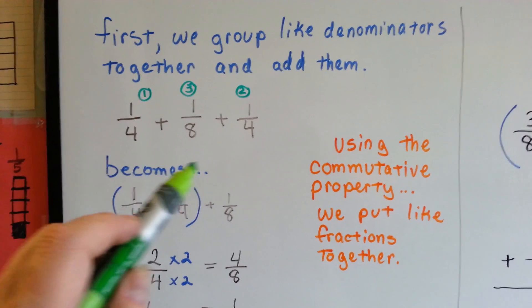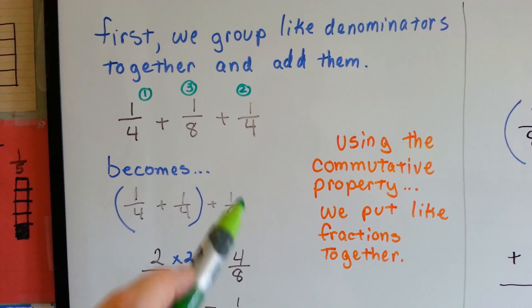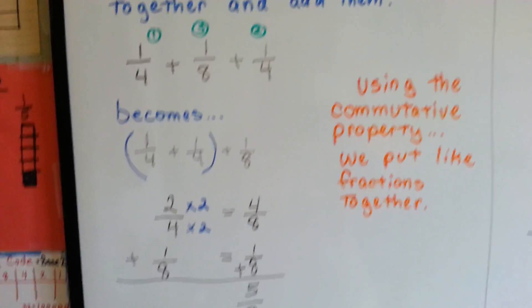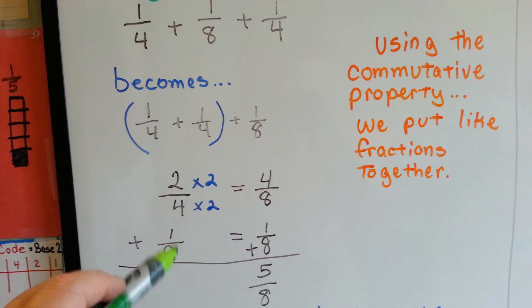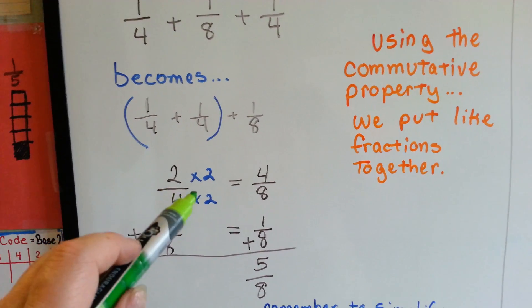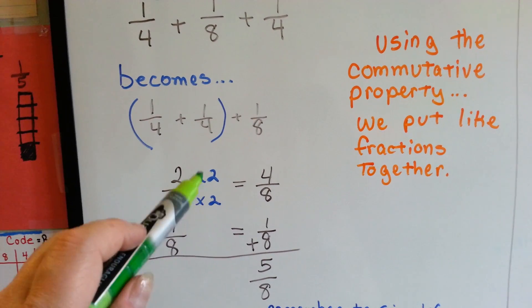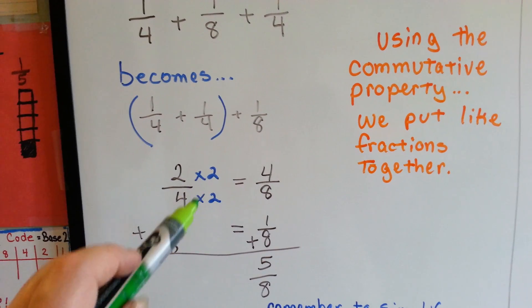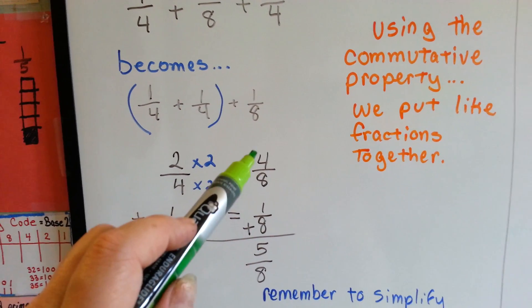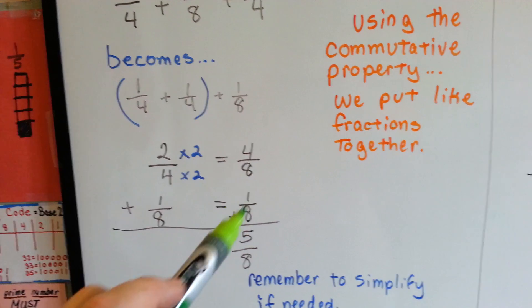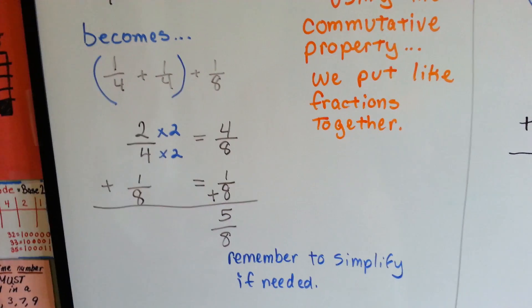We have 1 fourth plus 1 fourth, and then we add the 1 eighth. They can meet at eighths house, so the 4 and the 2 need to be multiplied by 2 to get there. We end up with 4 eighths plus 1 eighth, which is 5 eighths.